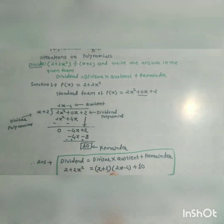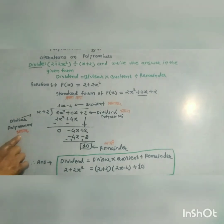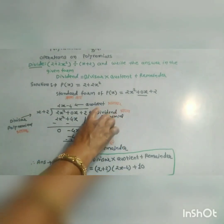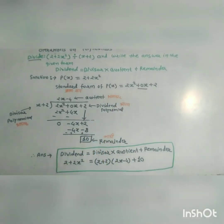Therefore 2 plus 2x squared equals (x plus 2)(2x minus 4) plus 10. Divisor means bhajak, dividend means bhajya, quotient means bhajakar, and remainder means bhaakki.